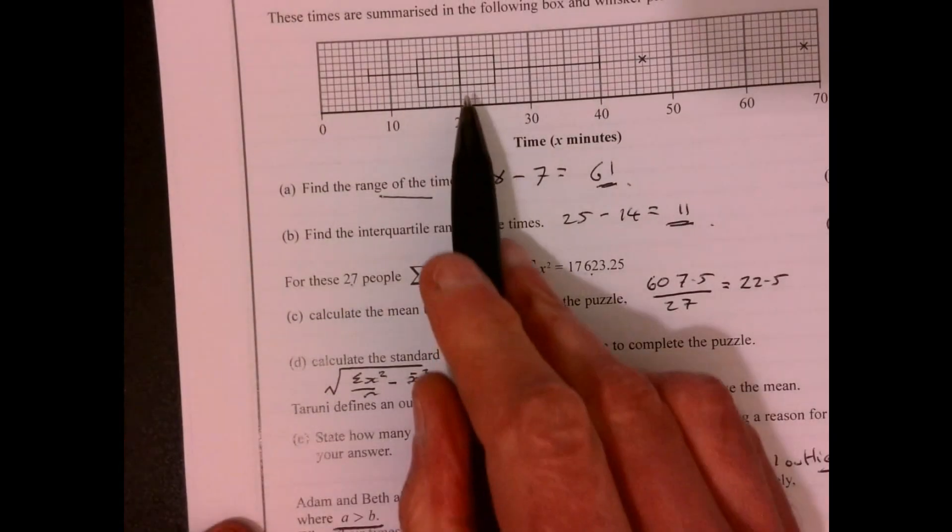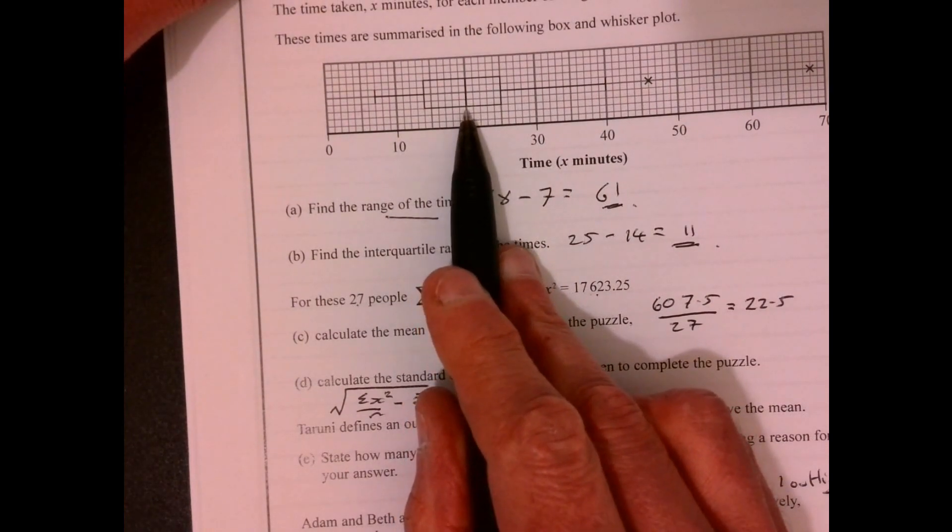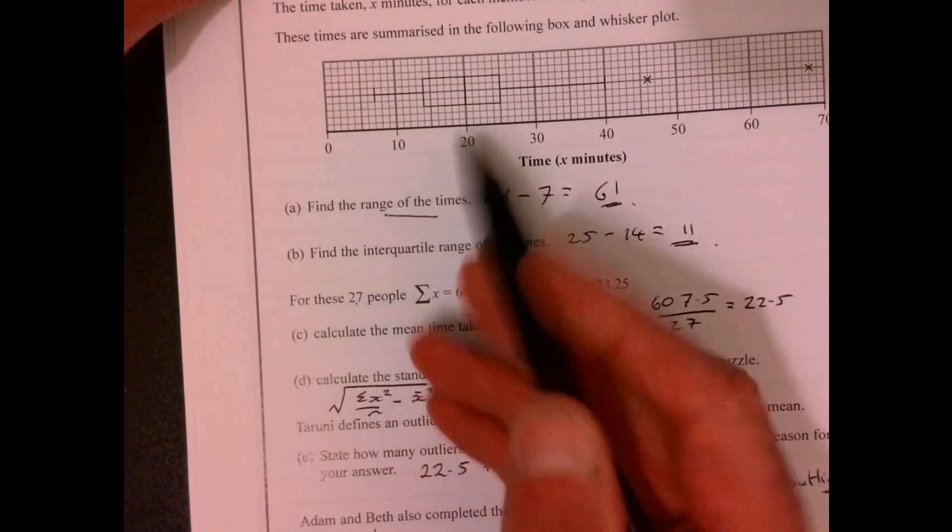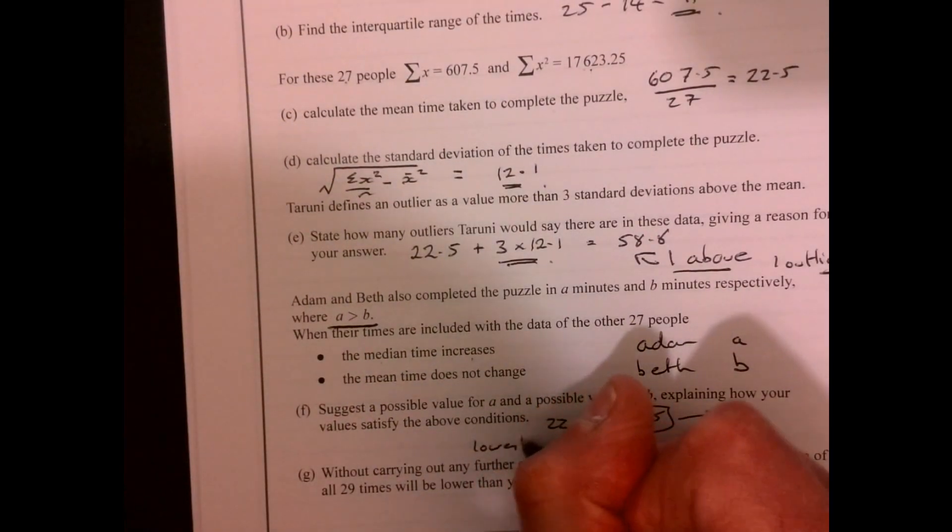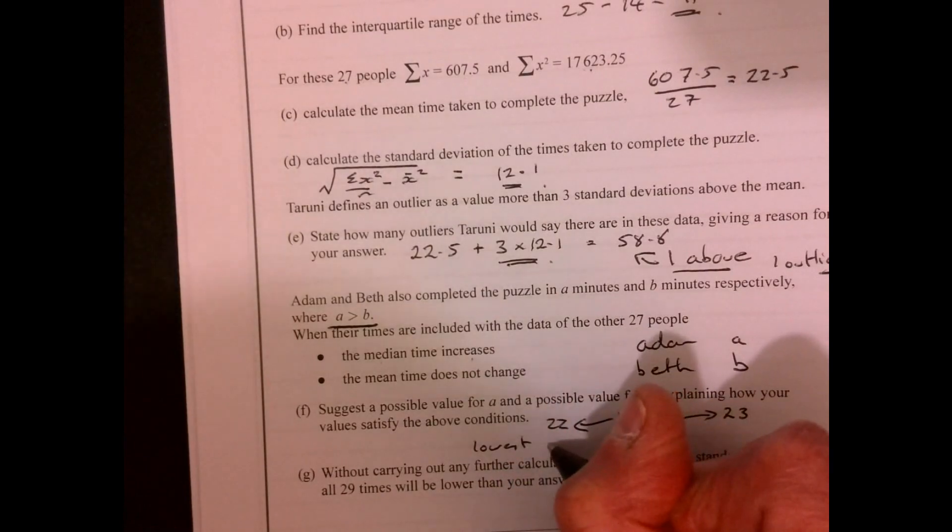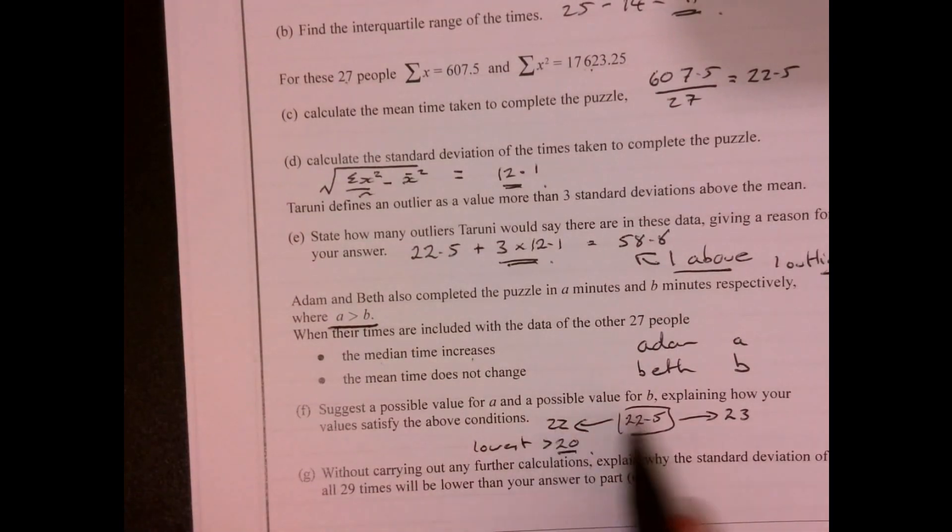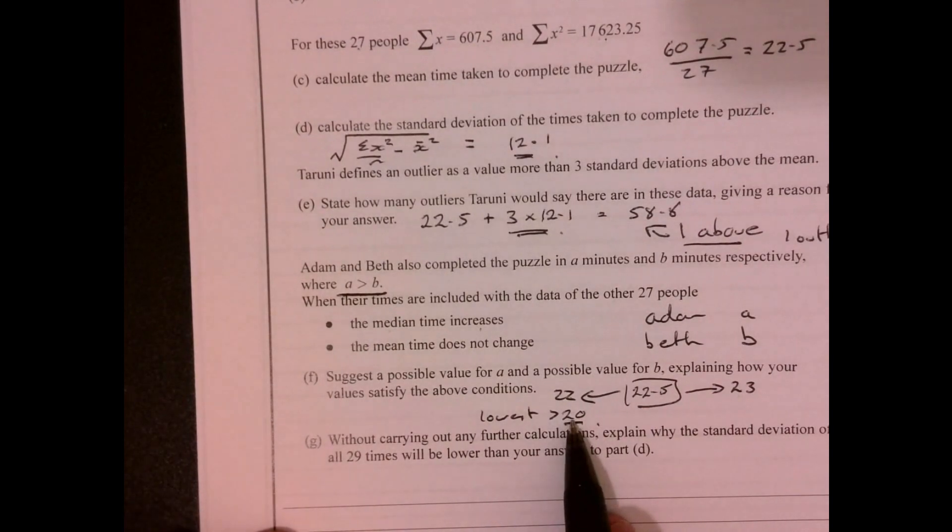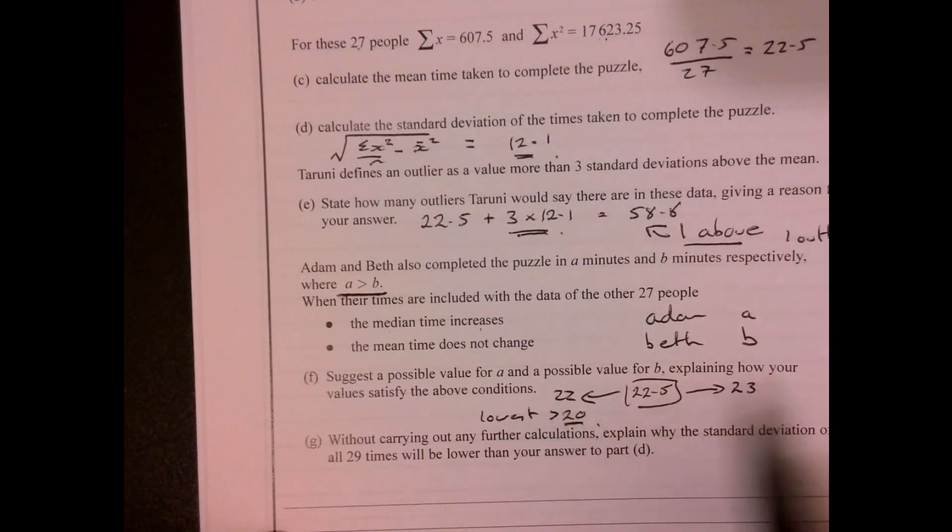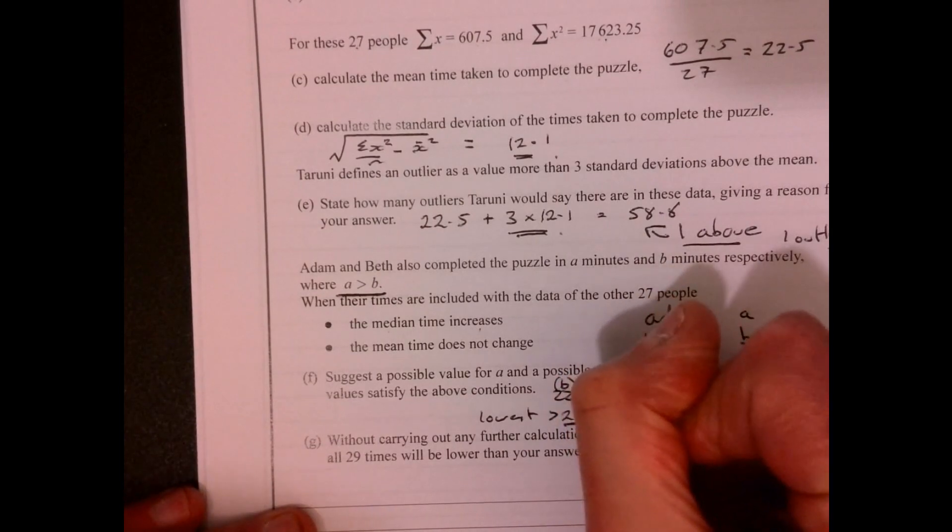Now remember the other thing that we're told is that the median time increases. So at the moment, the median is 20. So therefore, my lowest time must be, if it's more than 20, it's going to cause that median to increase. So the lowest of these times needs to be more than 20. So as long as we pick two numbers, either side of 22.5, and the lowest value has to be more than 20. And we should really define, that would be Adam, that would be Beth.